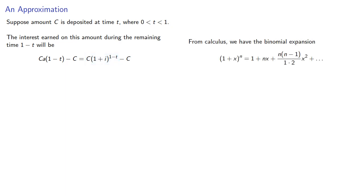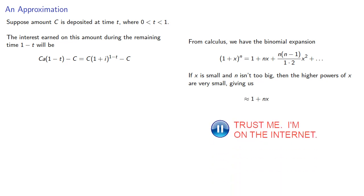From calculus, we have the binomial expansion. And if x is small and n isn't too big, then the higher powers of x are very small. And so we can approximate this power using just the first two terms, 1 plus nx. So applying this approximation gives us...